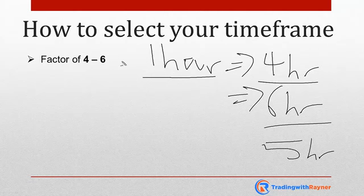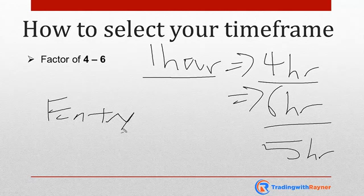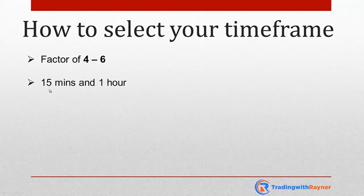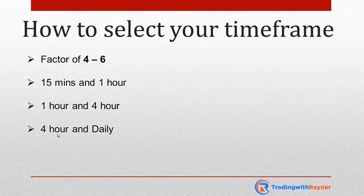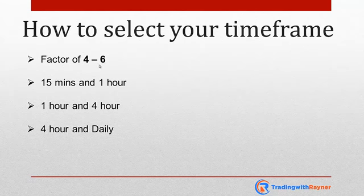This is how you select your higher timeframe - using a factor of four to six. Before you can select your higher timeframe, you must know your entry timeframe. Here are some examples: if you're entering off the 15-minute timeframe, the one-hour can be your higher timeframe. If you're entering off the one-hour, the four-hour can be your higher timeframe. If your entry is on the four-hour, the daily can be your higher timeframe. Don't tell me you're entering off the five-minute and looking at the monthly as your higher timeframe - it's way too far apart. You need to find the right balance using a factor of four to six.